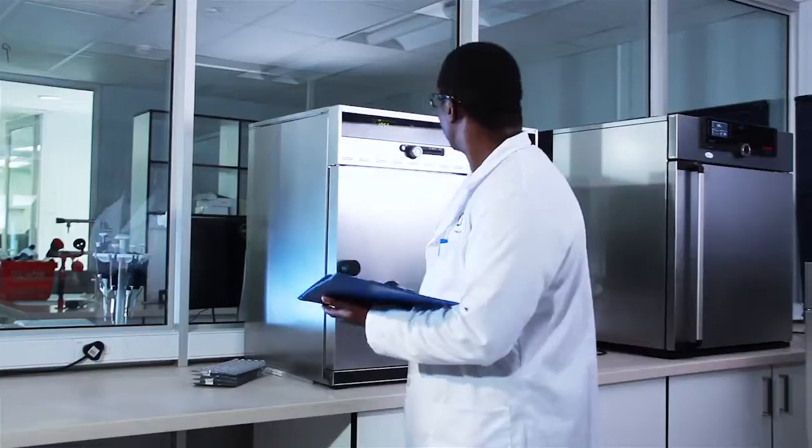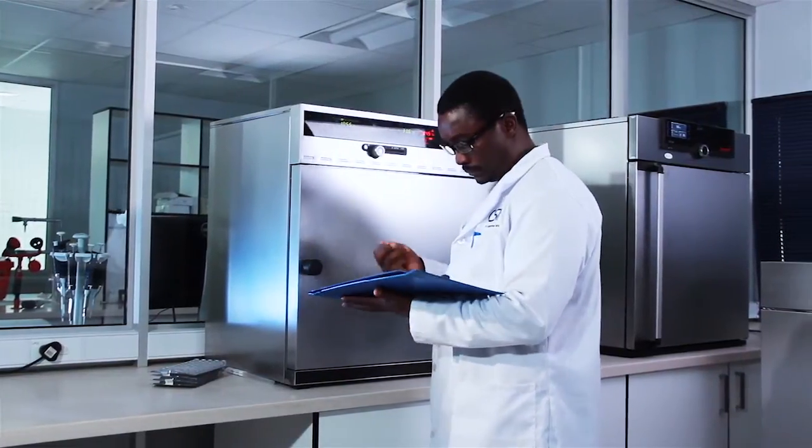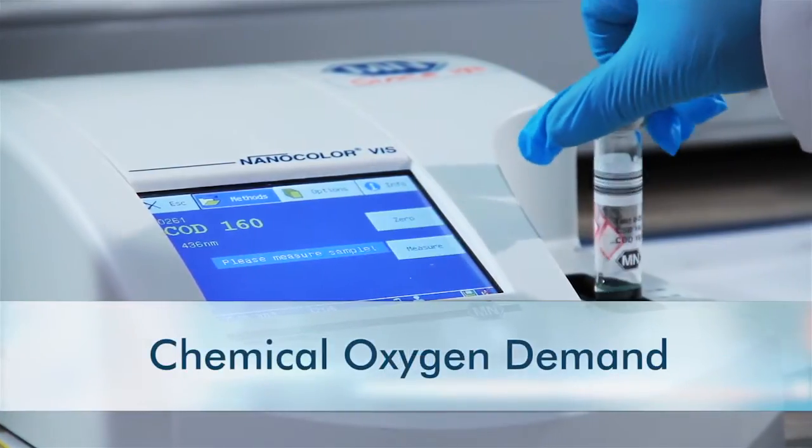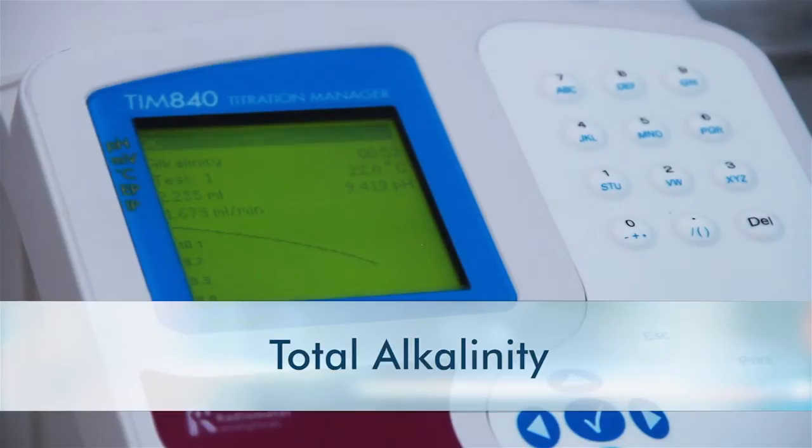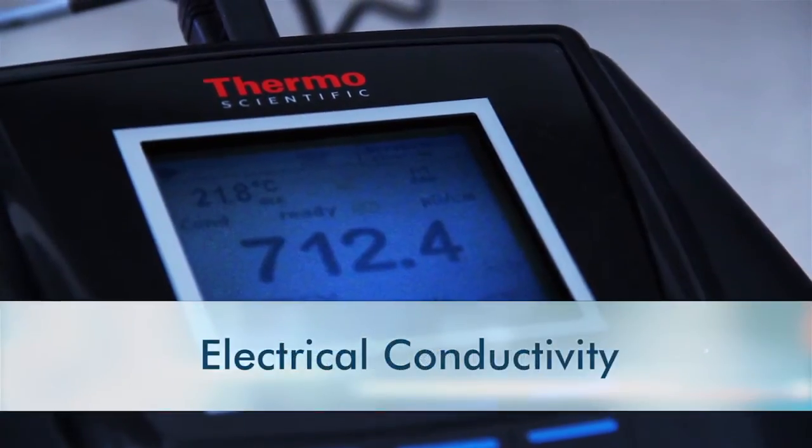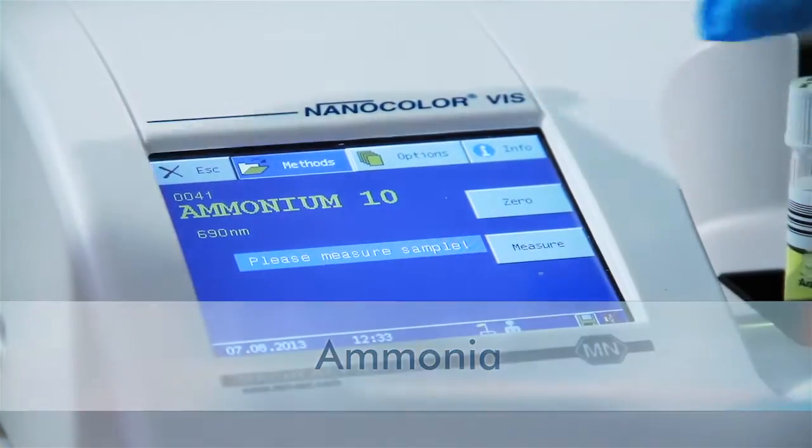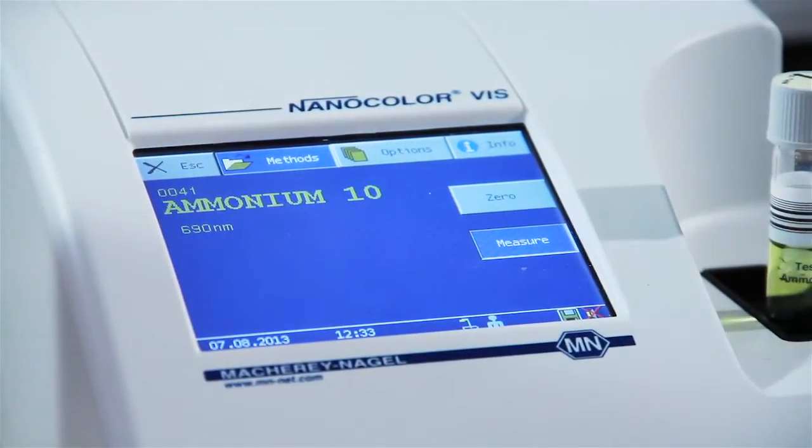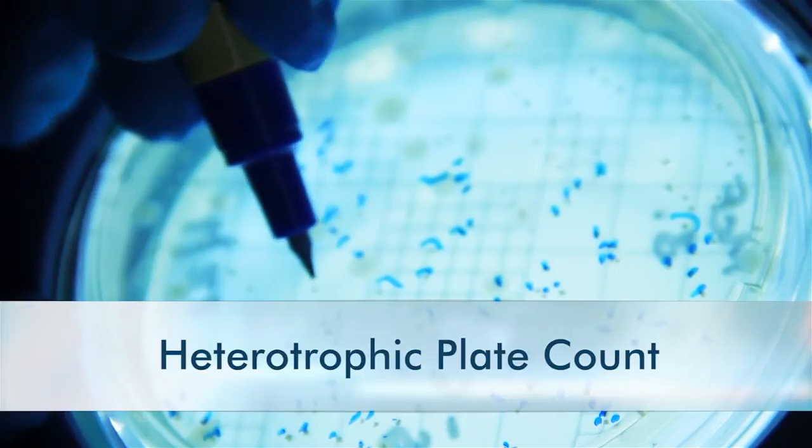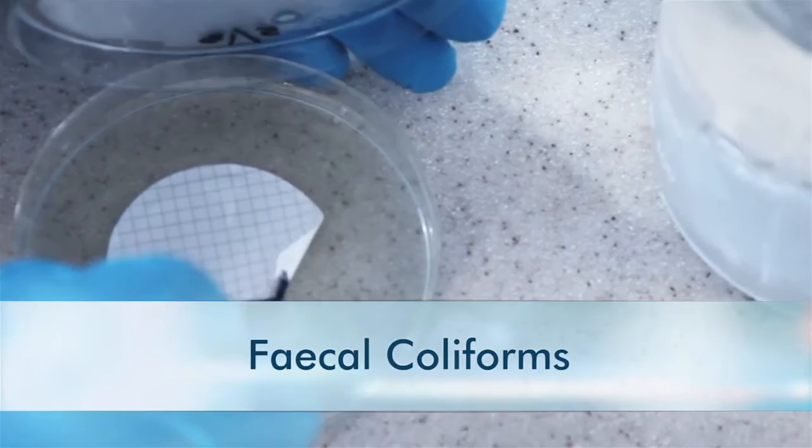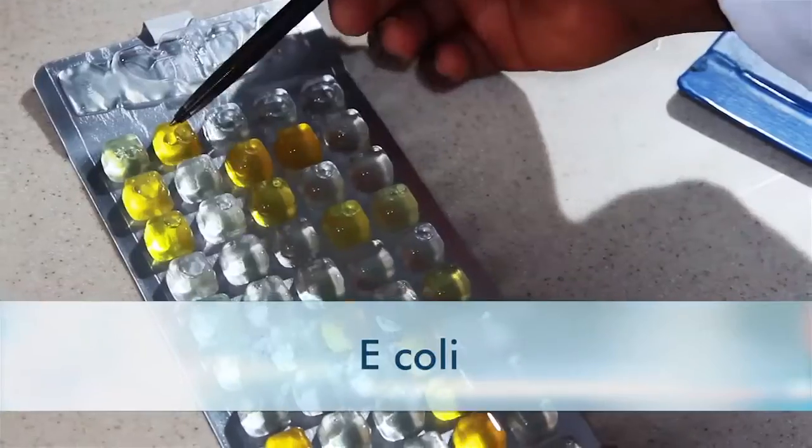In Phase 1, chemical analysis will test for pH, chemical oxygen demand, total alkalinity, electrical conductivity and ammonia. And microbiological analysis will test for heterotrophic plate count, total coliforms, fecal coliforms and E. coli.